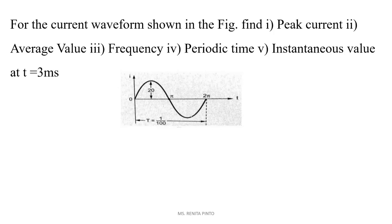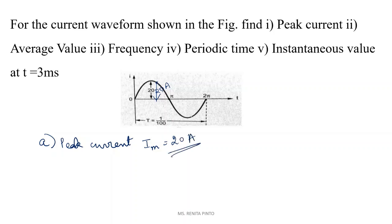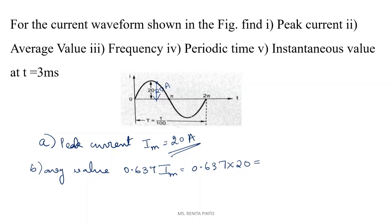Second problem: for a current waveform shown in a figure, find the peak current, average value, frequency, periodic time, and instantaneous value at t = 3 milliseconds. From the figure, the peak current Im = 20 A. The average value = 0.637 × Im = 0.637 × 20 = 12.74 A.